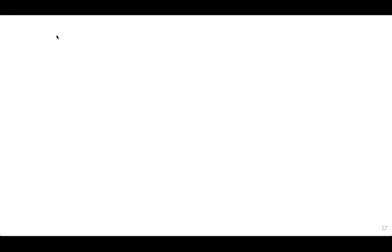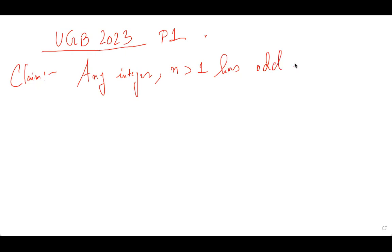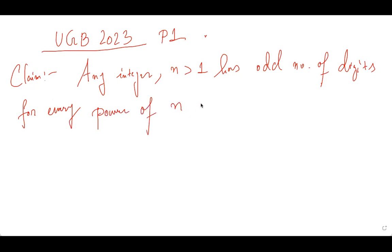First, I'll write down my claim. This is UGB 2023, Problem 1. The claim is: any integer n strictly greater than one has an odd number of digits for every power of n if and only if n is of the form 10 to the power 2k — that is, the exponent of 10 must be even.